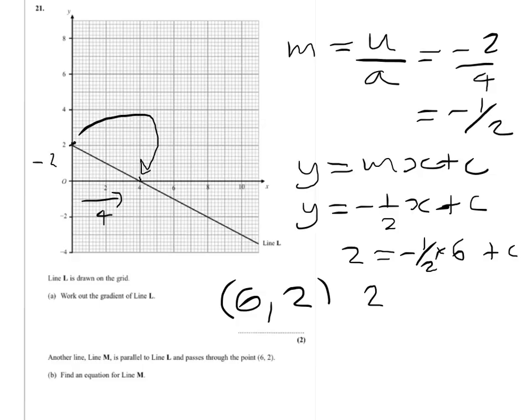So that's 2 equals minus 1 half times 6 is minus 3 plus c. We take the minus 3 to the other side, that will give me 2 plus 3, so c equals 5.